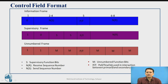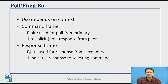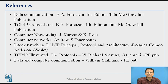In the control field: S stands for supervisory function bit, N(r) is the receive sequence number, N(s) is the transmit sequence number, M stands for unnumbered bit, and P/F stands for Poll/Final bit used for interaction. If it is a command frame, the P bit is set to 1 to solicit a response from the peer. In the response frame, the F bit being 1 indicates a response to the soliciting command.